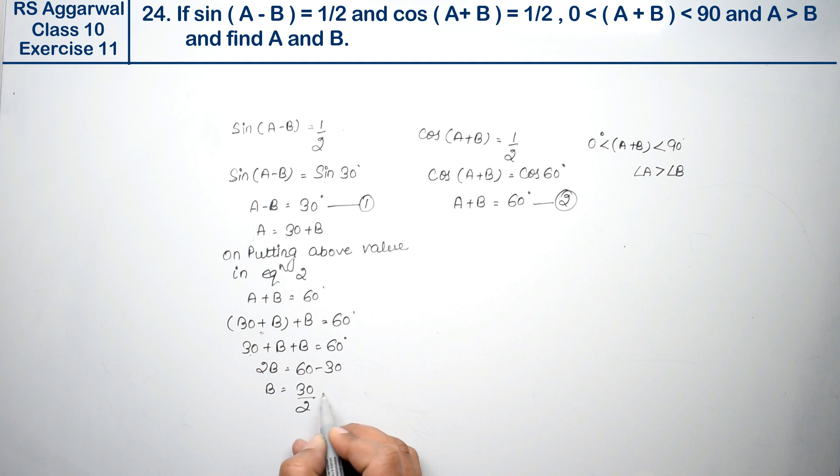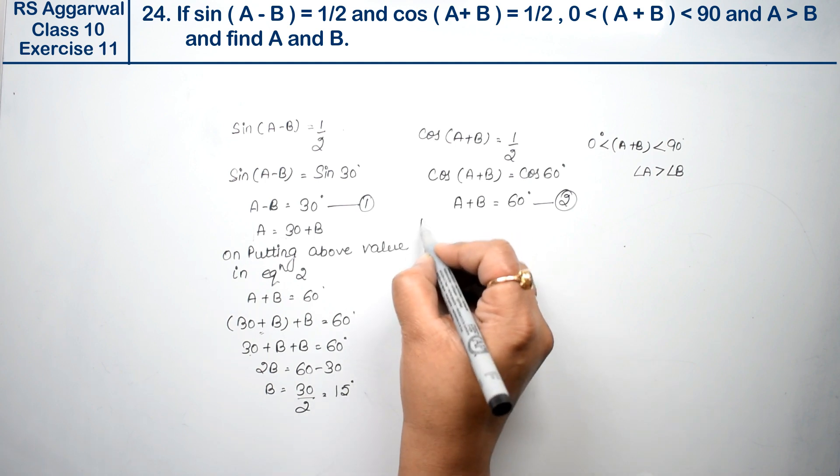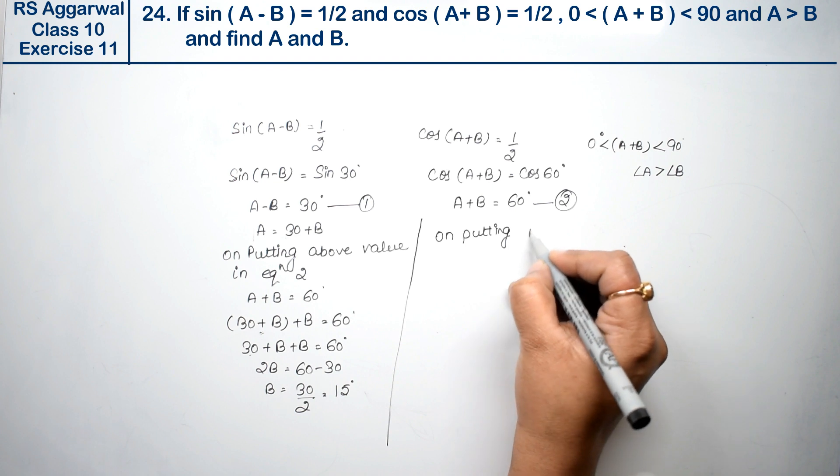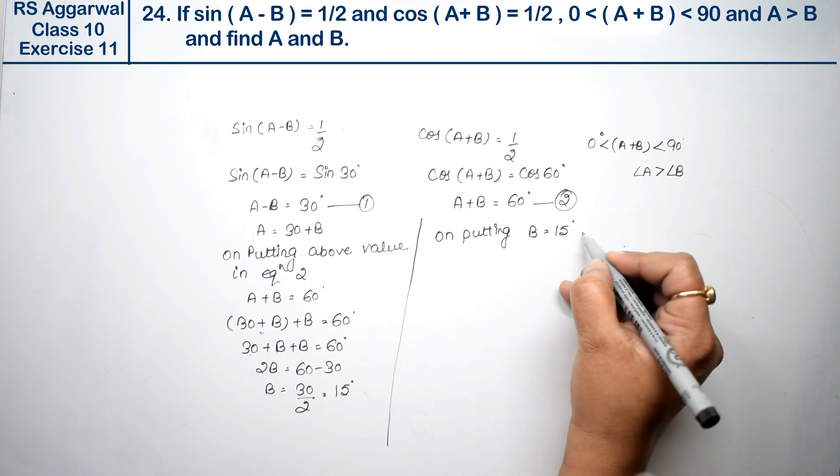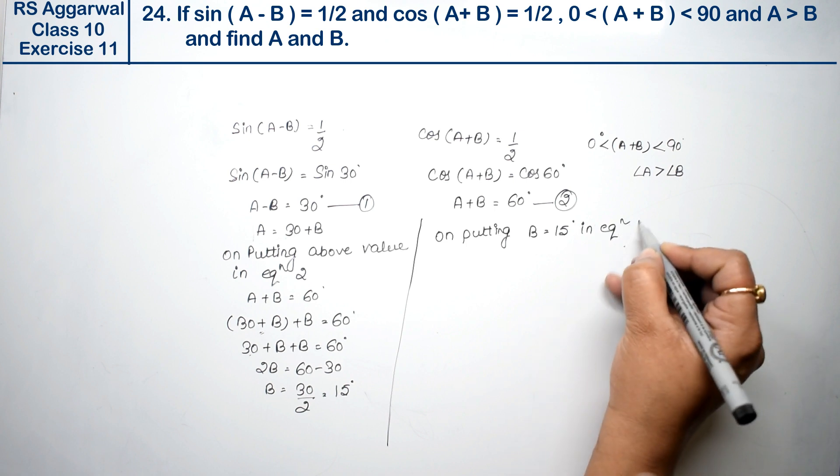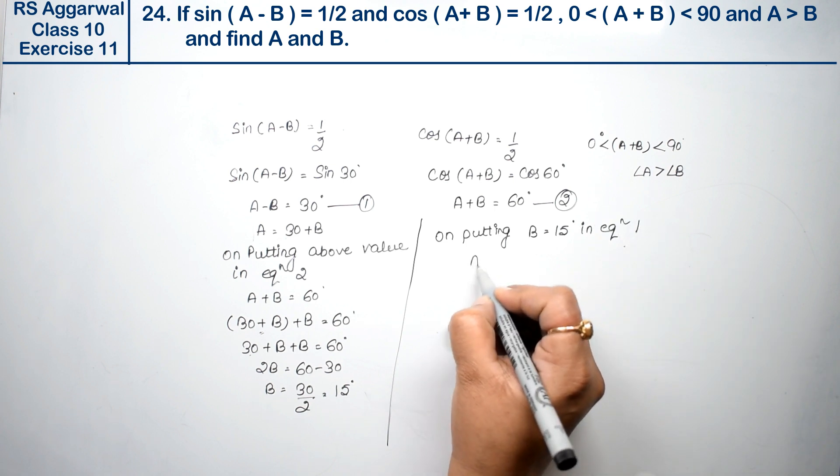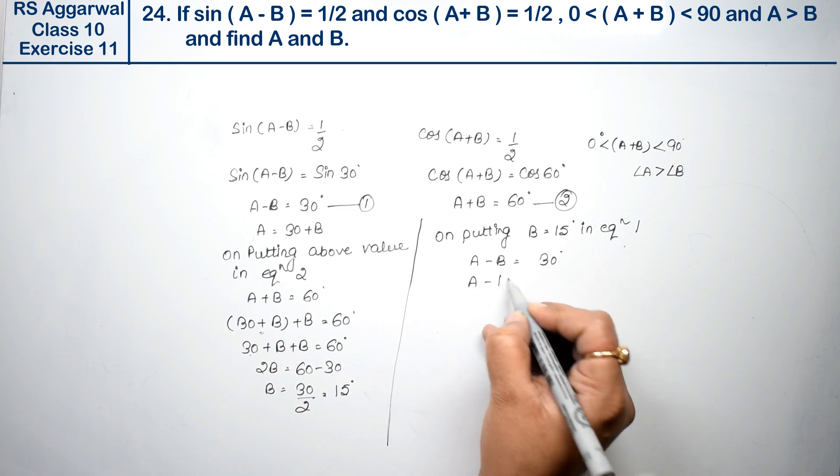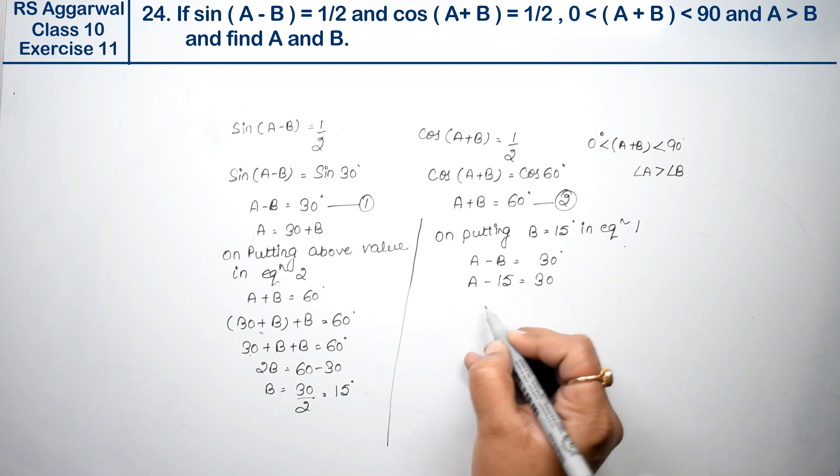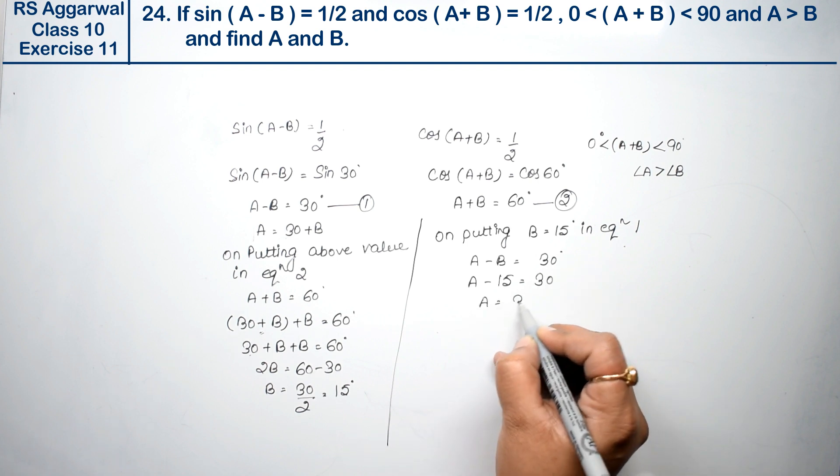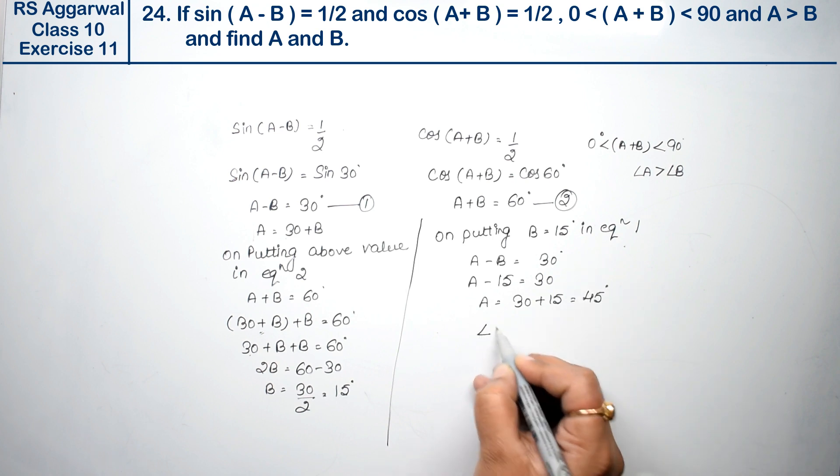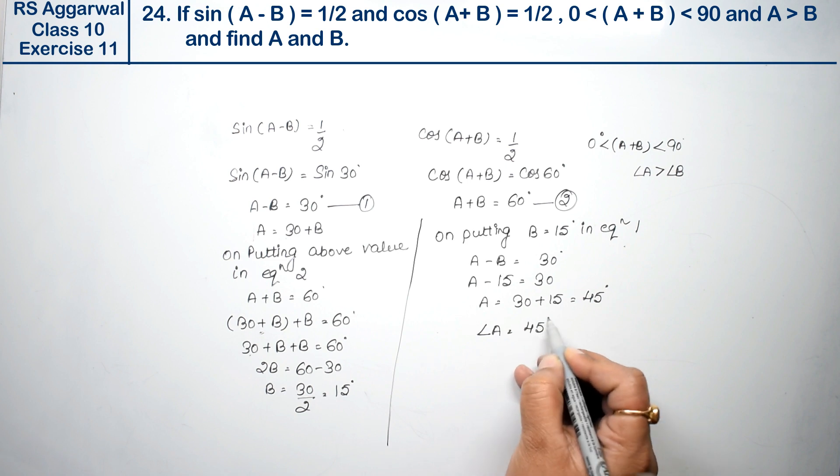Now we'll find A ki value. On putting B equals to 15 degree in equation first. A minus B equals to 30 degree. A minus B ki jagah we put 15, equals to 30, so A is 30 plus 15, which is 45 degree.